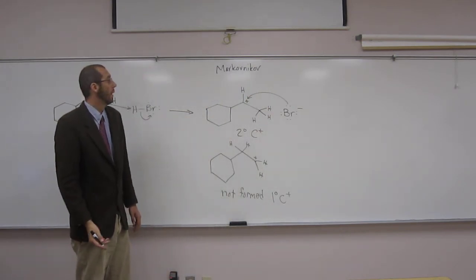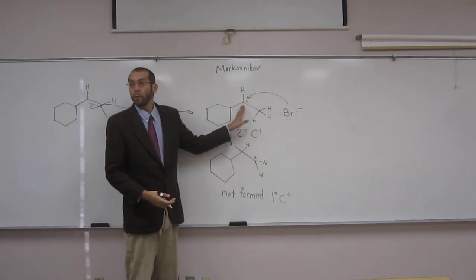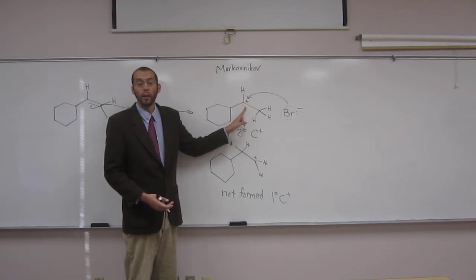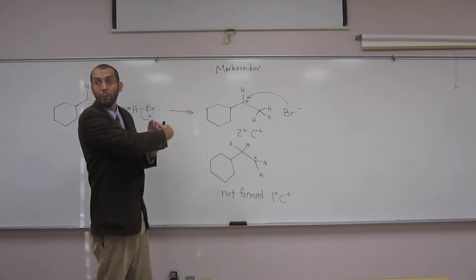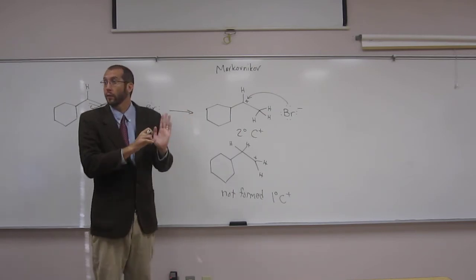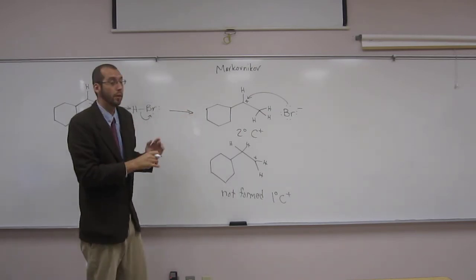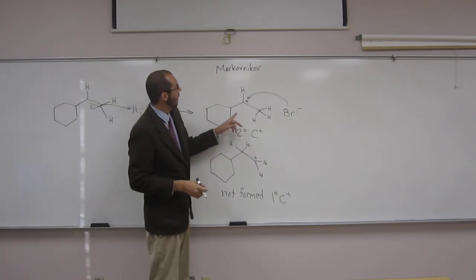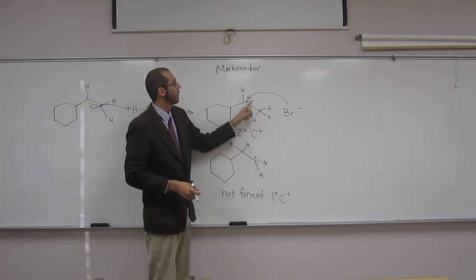So now what we're going to do is show the attack of the bromide ion. Like that. So it can attack. So this is planar. It's trigonal planar, right? Because it's the sp2 center.